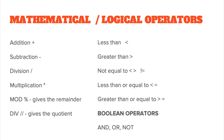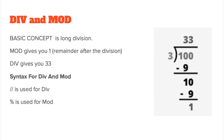Less than, greater than, not equal to, less than or equal to, and greater than or equal to are logical operators, and these come in handy when we do if statements. Now let's look at div and mod in more depth. If you divide 100 by 3, you get 33 as the quotient with 1 as the remainder. Mod gives you the remainder — 1. Div gives you the quotient — 33. The syntax is two slashes for div and the percentage symbol for mod.